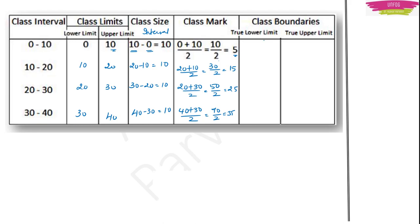Now class boundaries — in this case it is the same as the limits. True lower limit and true upper limit will be the same as the lower limit and upper limit: 10, 20, 30, 40. That is it. We have filled this table now.